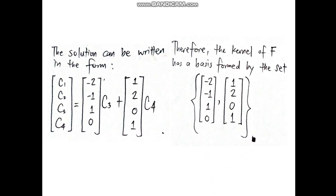Therefore, the kernel of F has a basis formed by the set of vectors: (-2, -1, 1, 0) and (1, 2, 0, 1).